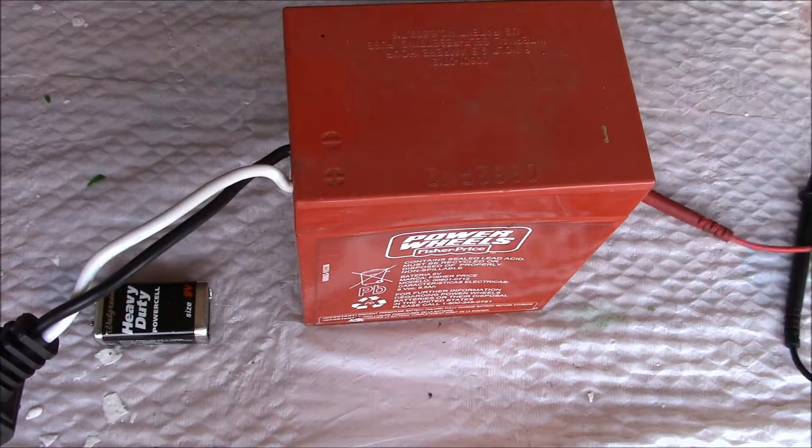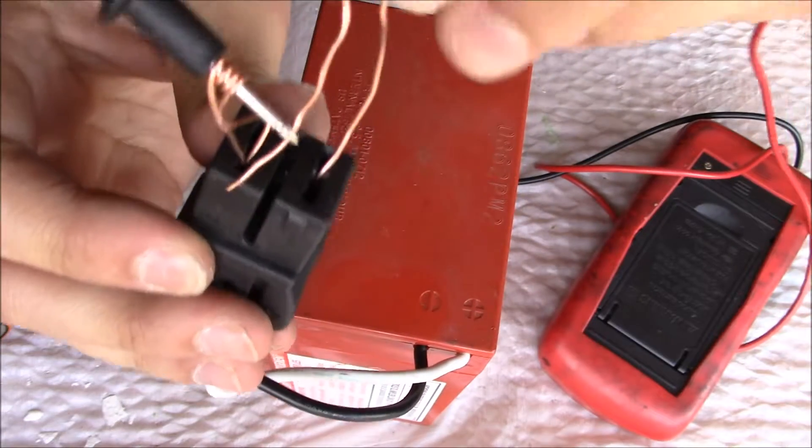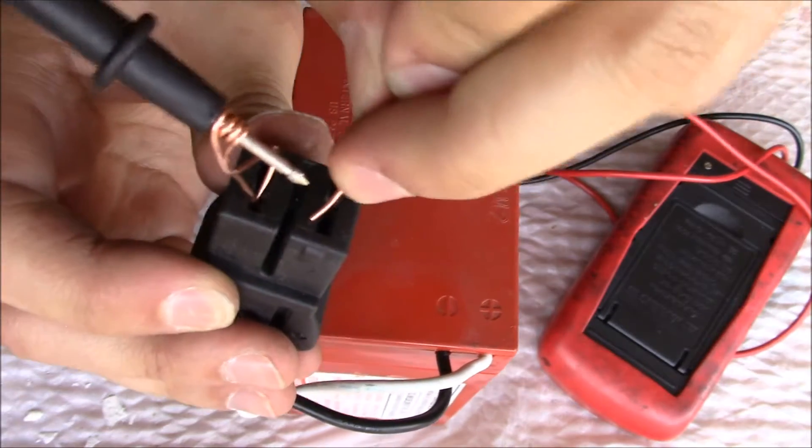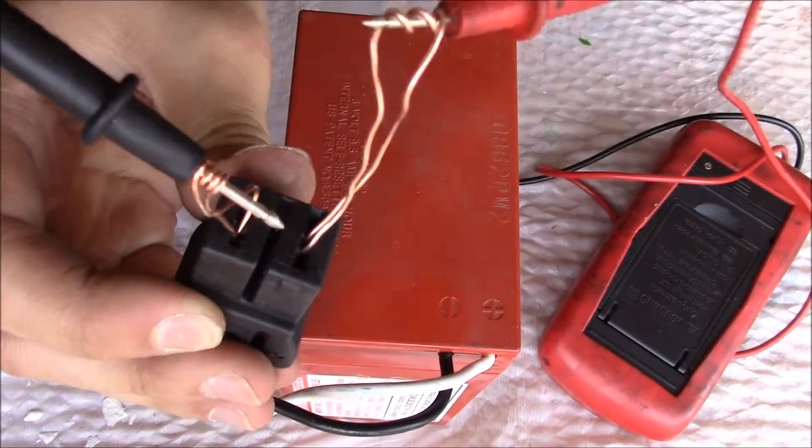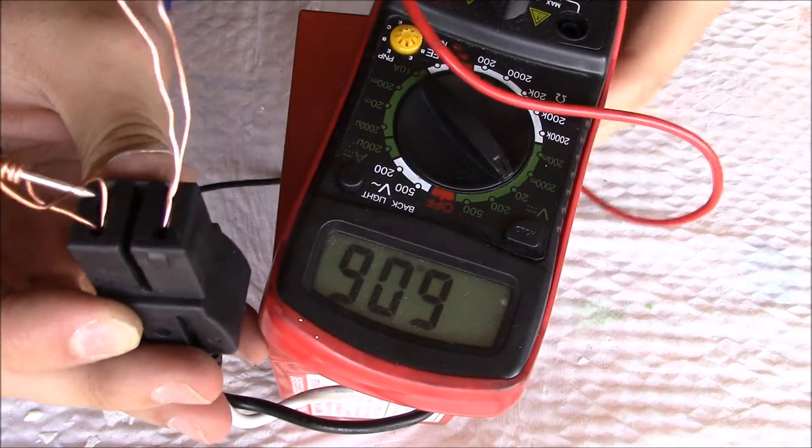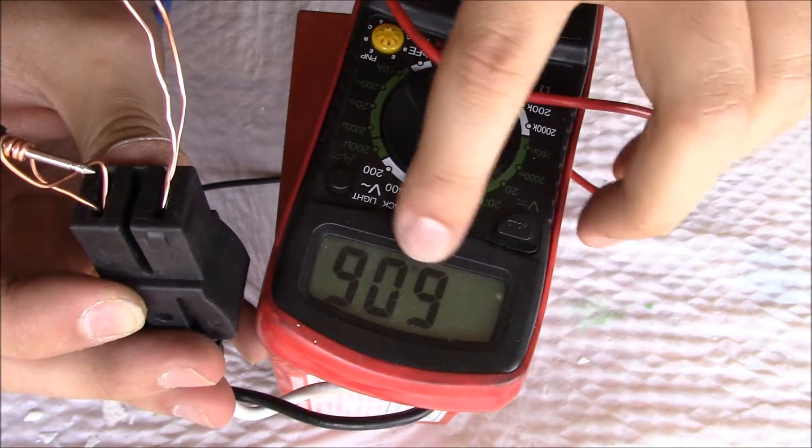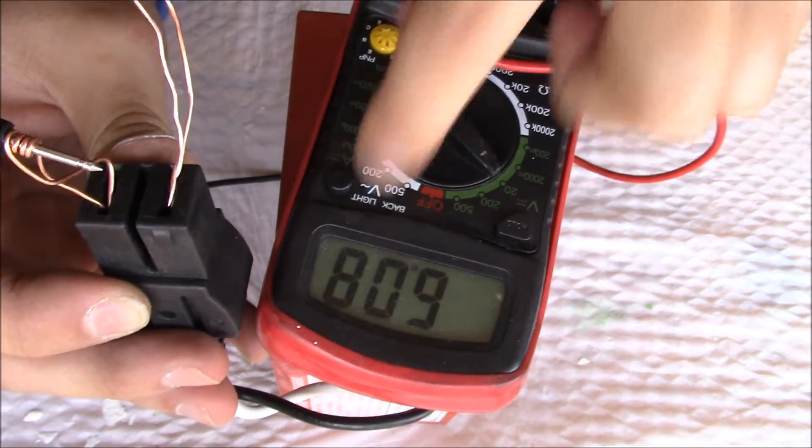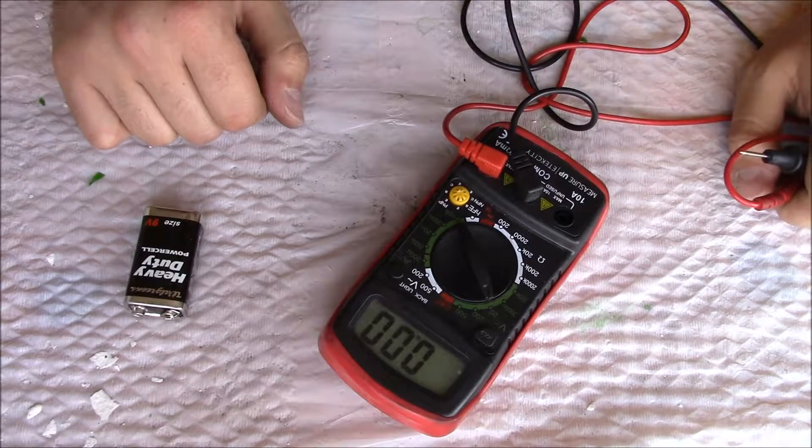The leads don't fit here, so what I had to do is get some copper wire and connect it between the leads and the plug. Looking here, this battery is six volt, it's fully charged at 6.06 volts.